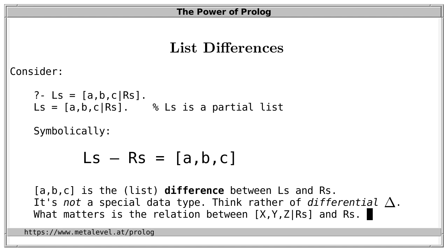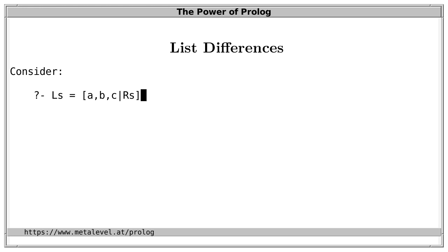What really matters is the relation between the list ABC with tail RS and RS. Or more generally, the list XYZ with tail RS and RS, and so on. The key point is that due to this connection between these two terms, we can further describe LS by stating something about the tail RS.